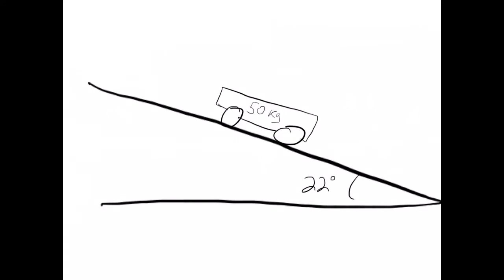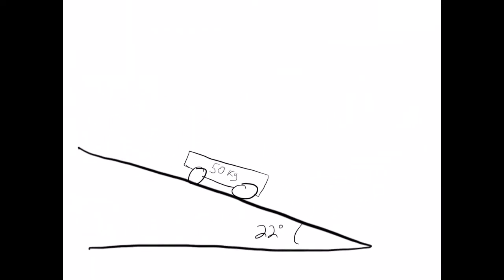Now that we've solved the Mr. Dickey dragging a box problem, let's do the cart on a ramp problem. Same 50 kilogram box, but this time we put wheels on it and put it on a ramp — no friction this time. The first thing we do is draw a force diagram. We have the force of gravity from the earth on the car, and the normal force from the ramp on the car. Since we have wheels, there's no friction force from the ramp on the car. The earth still pulls with 10 newtons per kilogram, so our gravity force is 500 newtons.